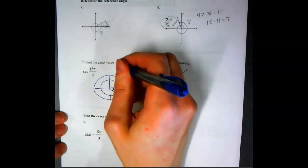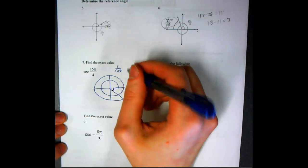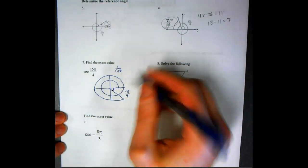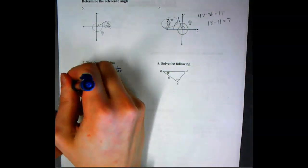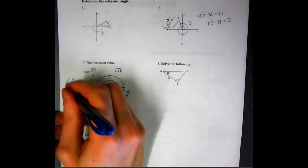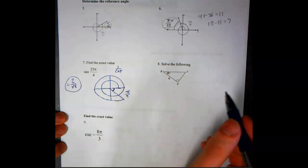Secant means that it is 1 over cosine. Our cosine is our x. So for this, it will be 2 root 2. So negative 2 root 2. You can use your unit circle for this if you need to.